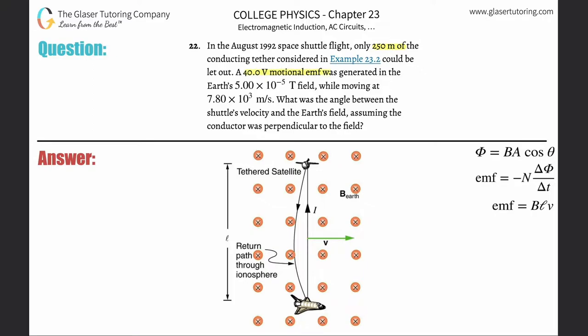A 40 volt motional EMF was generated in the Earth's 5 times 10 to the minus 5th Tesla field while moving at 7.8 times 10 to the third meters per second. What is the angle between the shuttle's velocity and the Earth's magnetic field assuming the conductor is perfect?